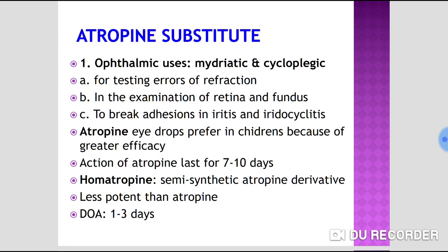Therapeutic uses — ophthalmic: atropine substitutes are used as mydriatics and cycloplegics for testing errors of refraction, checking visual acuity, fundus examination, and retinal examination. Atropine eye drops are preferred in children because of greater efficacy, but the disadvantage is that the action lasts 7 to 10 days, leaving the patient effectively blind for that period.